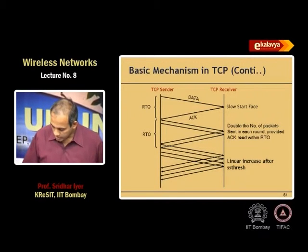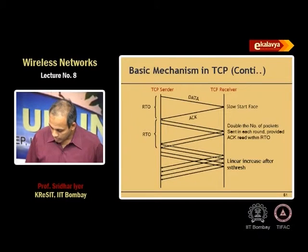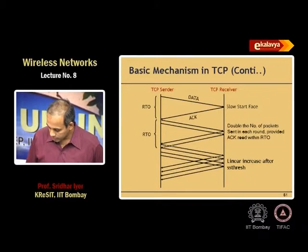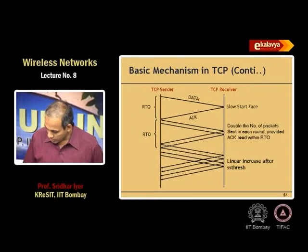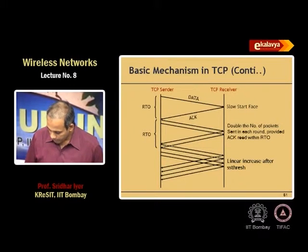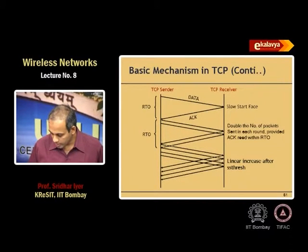The TCP sender starts by sending one packet and waiting for the ACK. If the ACK comes within the RTO, in the next round it sends two packets. If both ACKs come back within the same RTO, it sends four packets — growing exponentially. This is called the slow start phase of TCP. It is a misnomer — it is not starting slow, it is growing exponentially: 1, 2, 4, 8, 16, and so on.